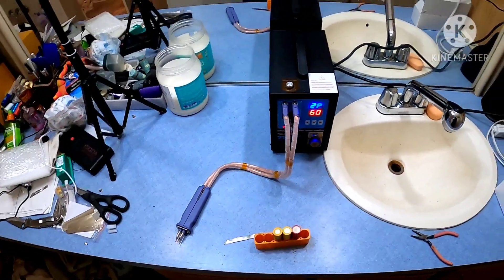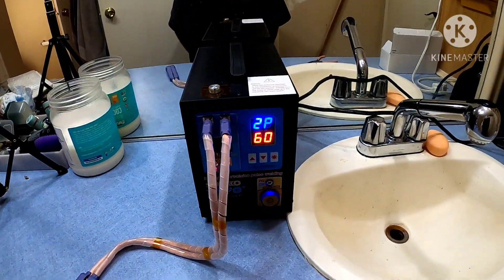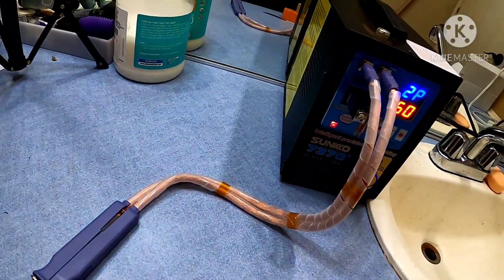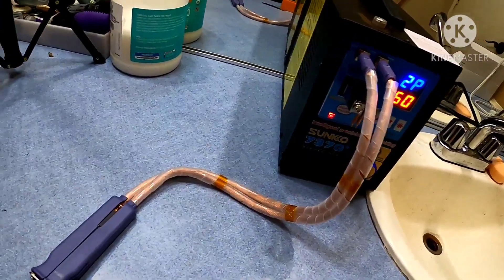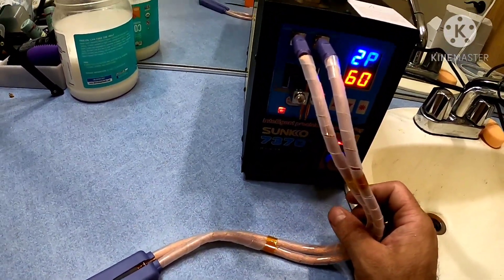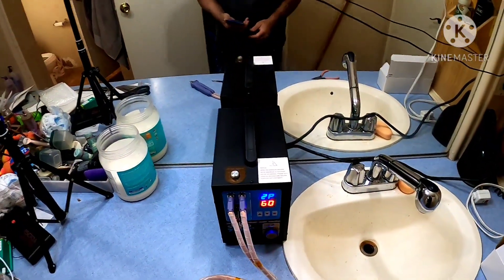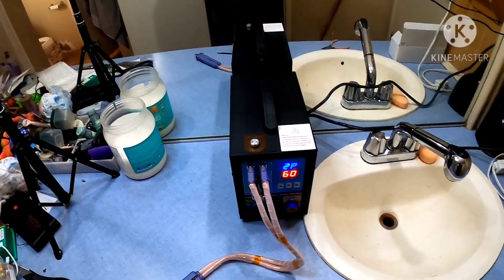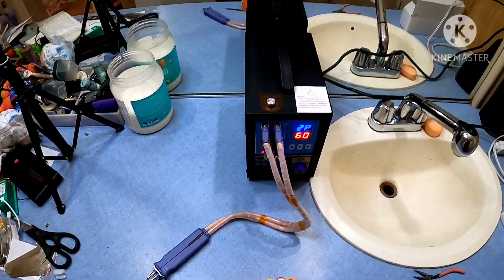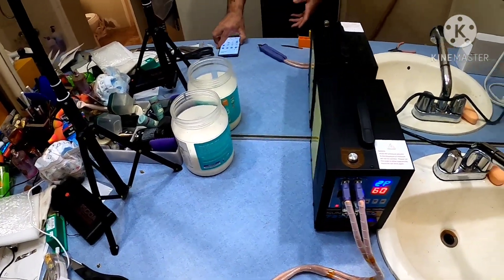Alright, so I'm gonna do a little video here on the Sunco 737 G Plus spot welder, the one that has the pin attachment included on it, which is like an extra hundred something dollars just to have that little attachment on it.